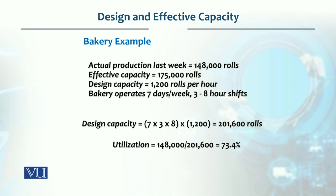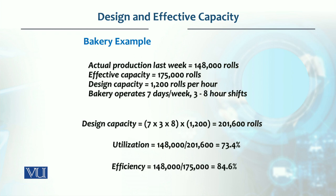Now let's calculate utilization: utilization is actual production 148,000 divided by design capacity 201,600, which gives 73.4 percent. If we check efficiency, it is actual output 148,000 divided by effective capacity 175,000 rolls per week, which comes to 84.6 percent.